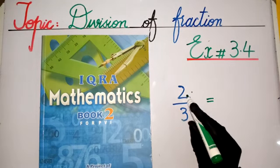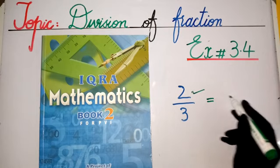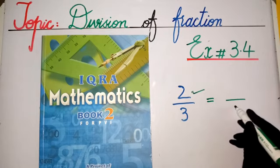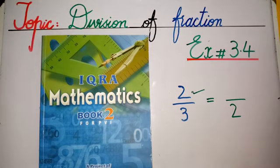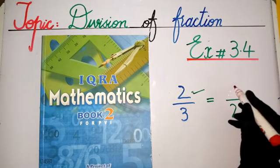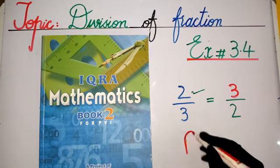When we have this numerator and that denominator, it will become the denominator. In this place, we have 3 in the form of the numerator. This numerator is the denominator.